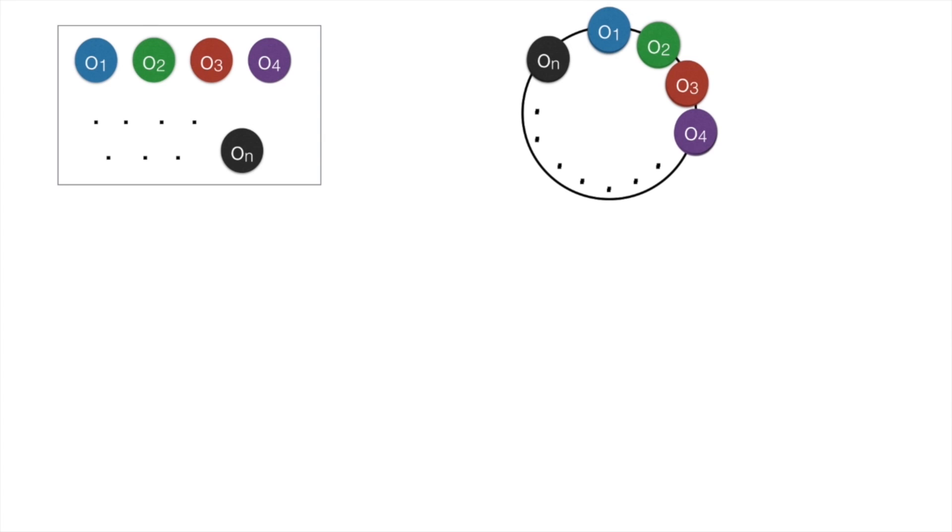One circular permutation for this group of objects would be from o1 to o n. Now let us see what linear permutation can I get from this circular permutation. One linear permutation would be o1, o2, o3 until o n.